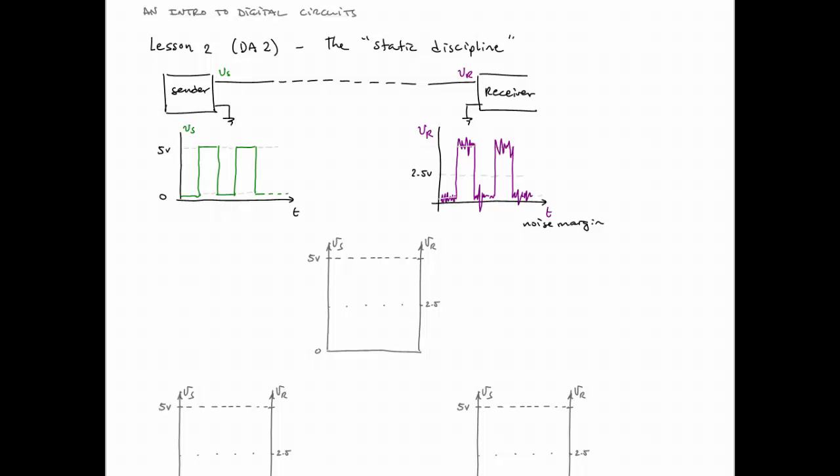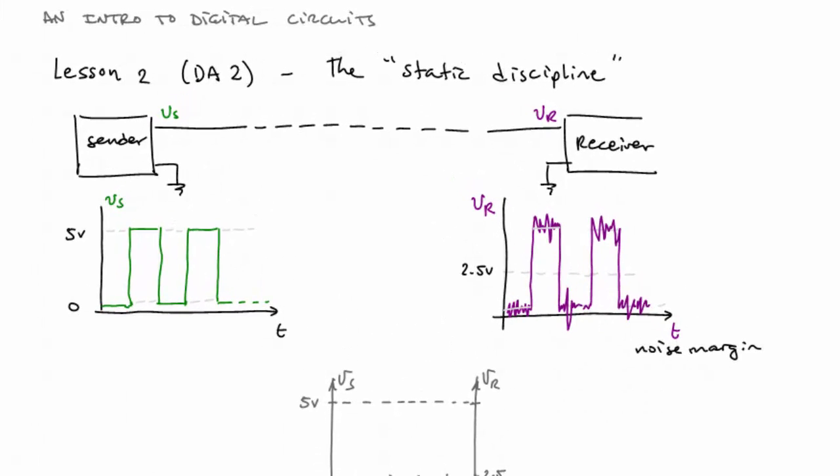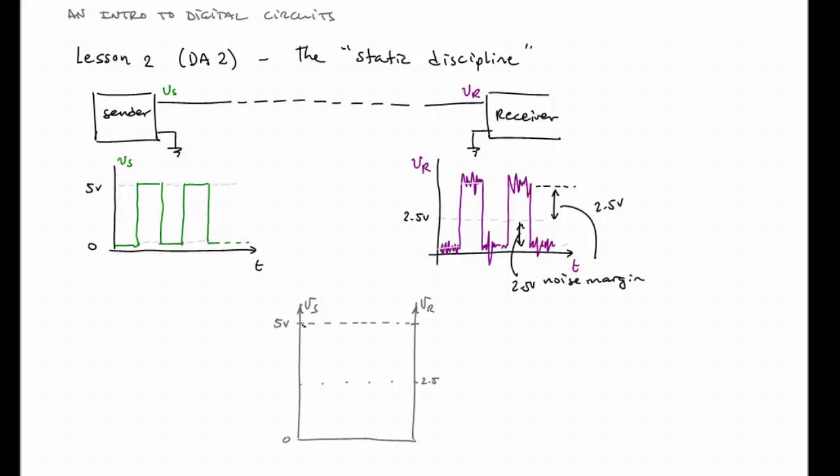Now we want to develop the idea of the static discipline, and we're going to launch off from where we left last time, which was that the sender would send a 0 volt or a 5 volt level signal, and the receiver, if it could distinguish anything above 2.5 volts from anything below 2.5 volts, then it would be immune to a significant amount of noise. Specifically, it would be immune to any noise that spanned up to 2.5 volts between the high level and the 2.5 volt threshold,